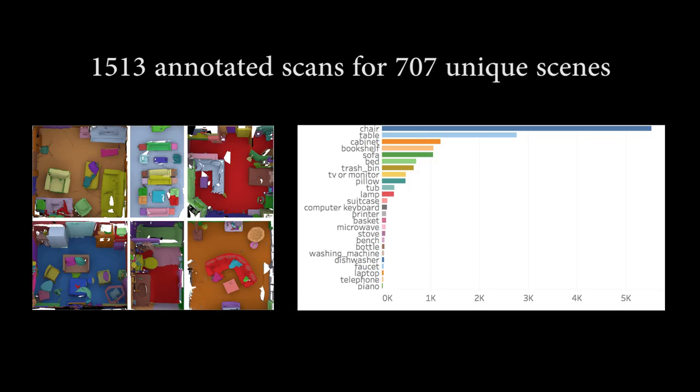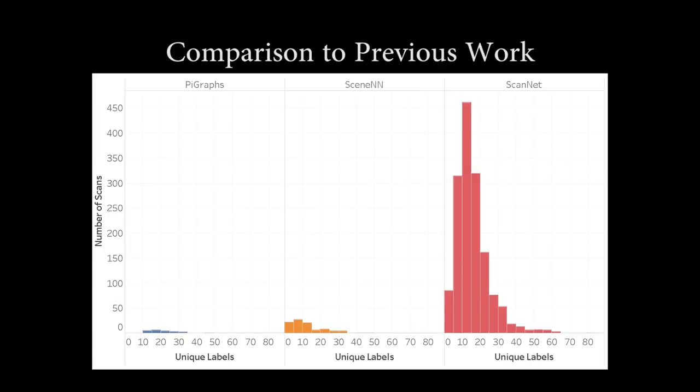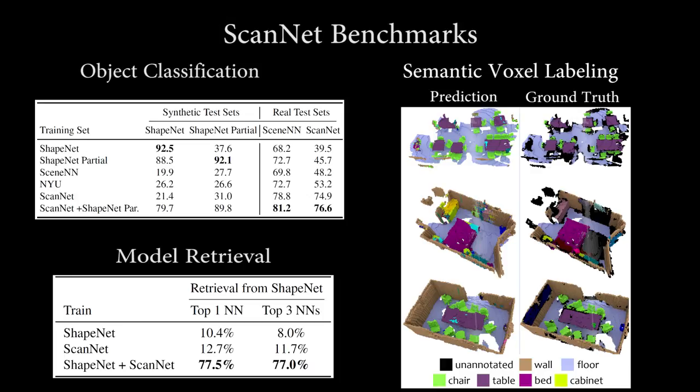ScanNet currently has 1,500 annotated scans for 700 unique spaces and is still growing. From these scenes, we have orders of magnitude more labeled objects than any previous RGBD 3D reconstruction dataset.